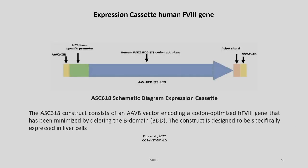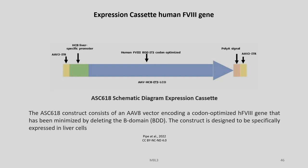Let us look at the expression cassette of the human factor 8 gene. The AC618 construct consists of an AAV8 vector encoding a codon-optimized human factor 8 gene that has been minimized by deleting the B domain, which has no functional role. The construct is designed to be specifically expressed in liver cells.